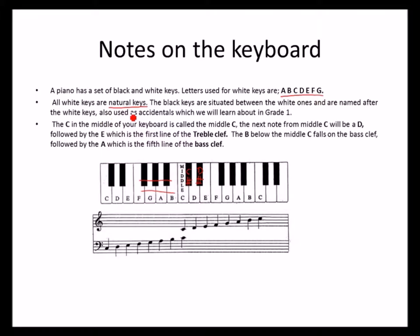We will look at black keys as accidentals in the following chapters of Grade One. The C in the middle of your keyboard is called the middle C. The next note from the middle C is D. The middle C is located on the ledger line of the staff.